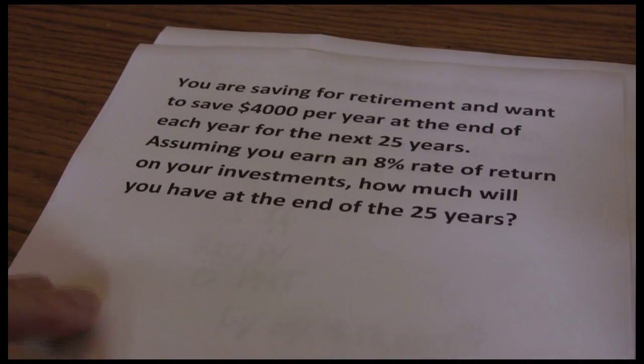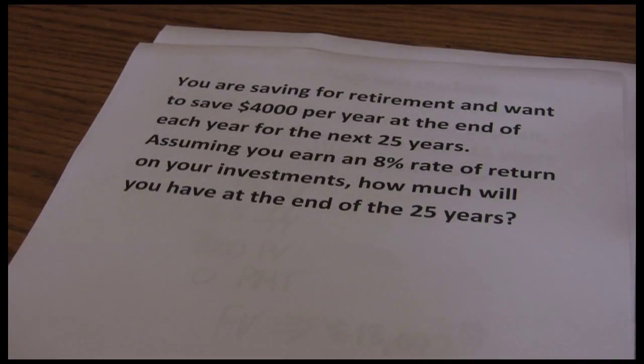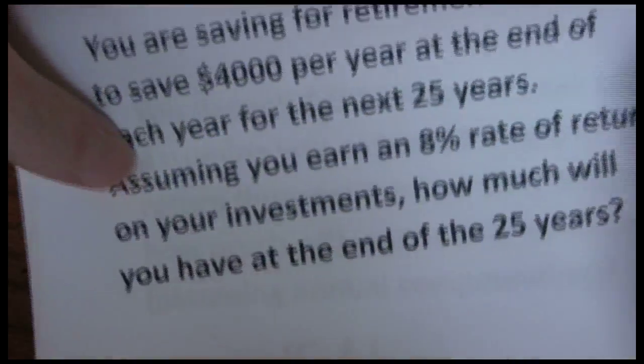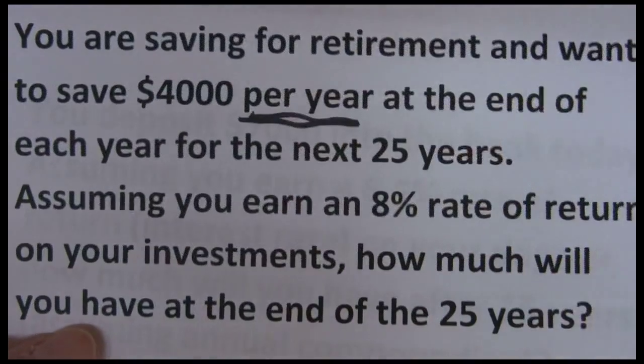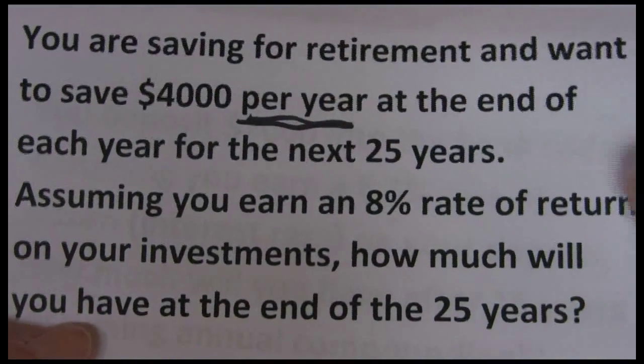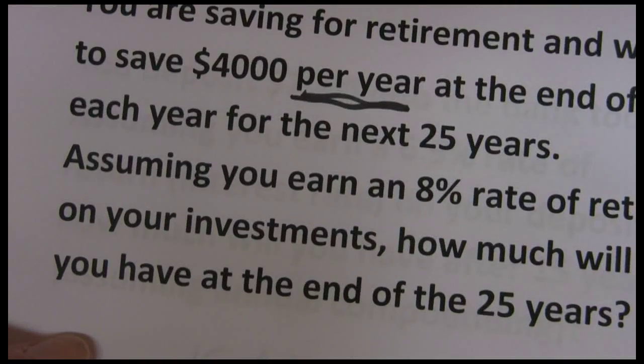With our next problem, we're now saving for retirement. We want to save $4,000 per year at the end of each year. That $4,000 per year tells us we're dealing with an annuity here. Whenever you see the words per year, per month, or each period, each year, you know that you're dealing with an annuity.